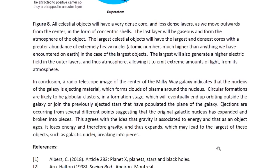In conclusion, a radio telescope image of the center of the Milky Way galaxy indicates that the nucleus of the galaxy is ejecting material which forms clouds of plasma around the nucleus. Circular formations are likely to be globular clusters in a formation stage, which will eventually end up orbiting outside the galaxy or join the previously ejected stars that have populated the plane of the galaxy. Ejections are occurring from several different points, suggesting that the original galactic nucleus has expanded and broken into pieces.